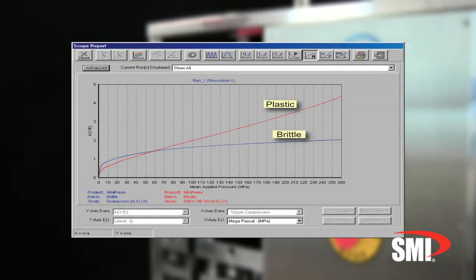The Heckel plot: a plot of the natural log of 1 over E, where E represents porosity against the applied pressure, providing information about the initial packing properties and material yield point.